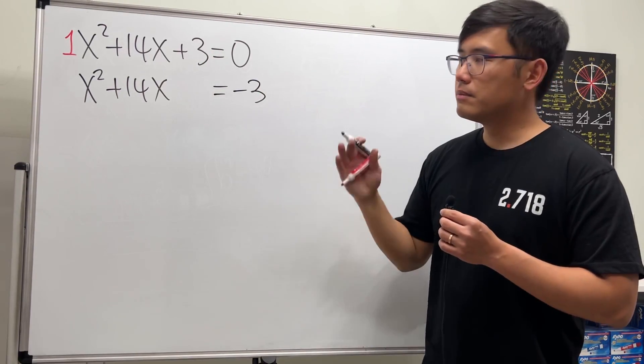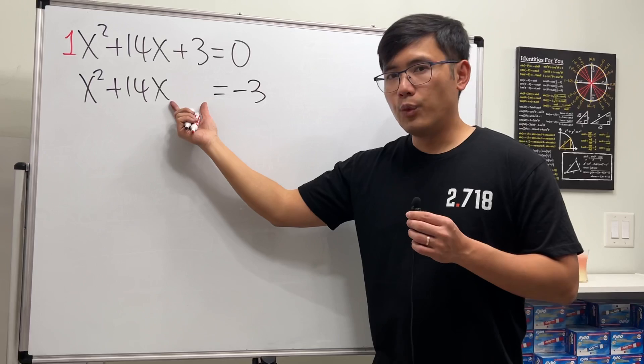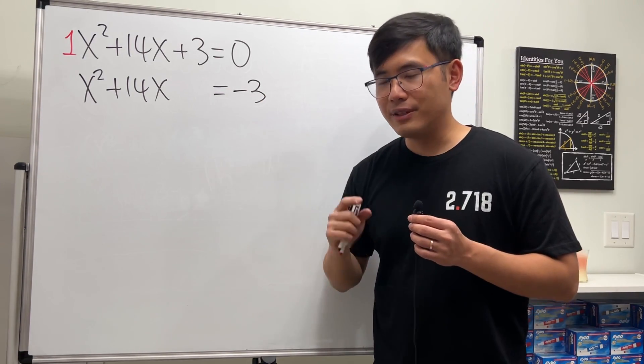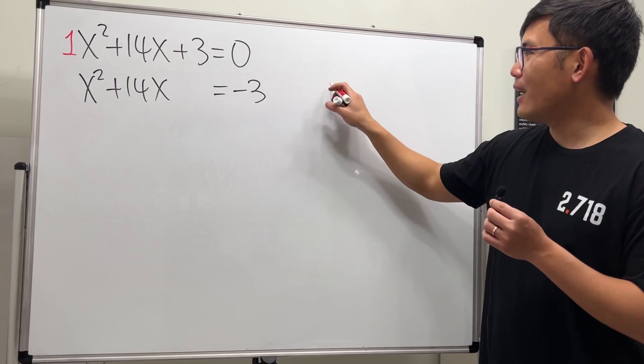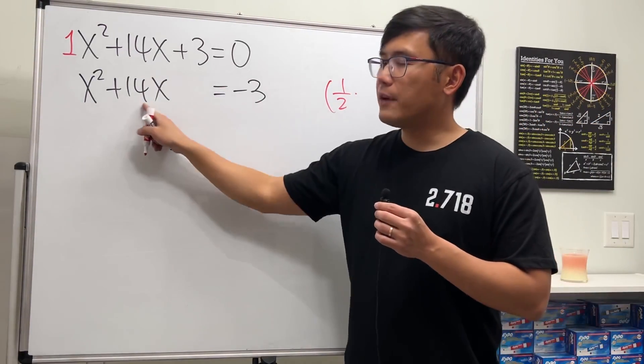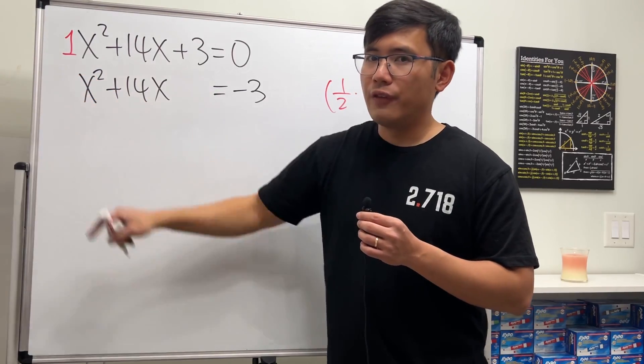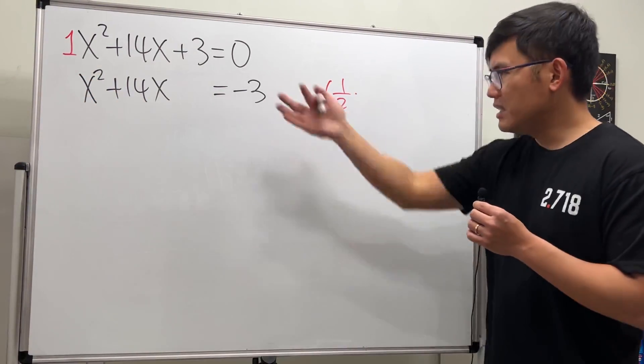Now we're going to add a number here on both sides, and I call it the magic number. To figure it out, we take half of the b value here. Again, we have to make sure there's a 1 in front of the x squared to do this.